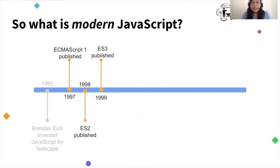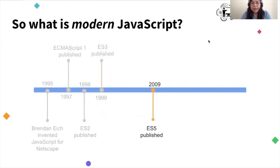What this means is that Netscape shared the specification of the JavaScript language, so every vendor could use it to implement their own. Several additions happened in 1998 and 1999 in the standard, but then nothing happened in the standard for 10 years, until 2009, when version 5 was published.